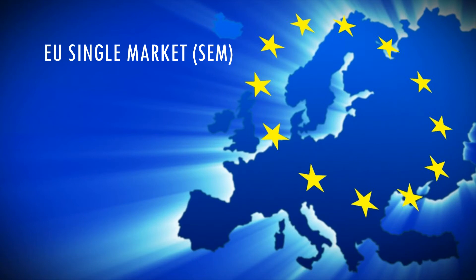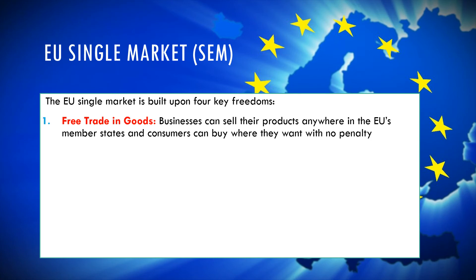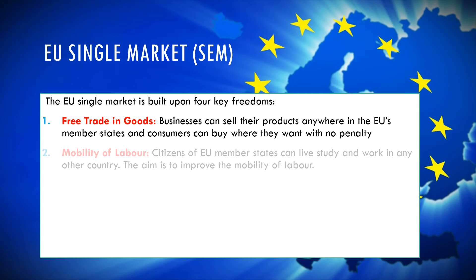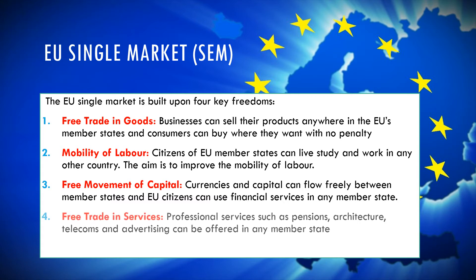The European Single Market, sometimes known as the SEM, is based on four key principles. First, free trade in goods — businesses can sell their products anywhere in the EU without tariffs or quotas. Second, mobility of labour — EU citizens can live, study, and work in any member country. Third, free movement of capital — money and currency can flow freely between member states. Fourth, free trade in services — professional services such as pensions advice, architecture, telecoms, and advertising can be offered in any member state.